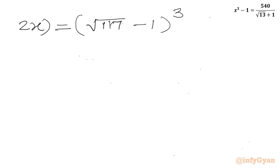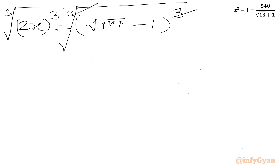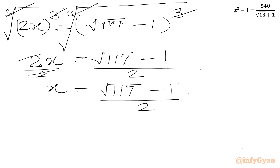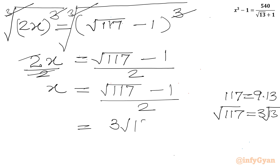Taking the cube root of both sides, for real values of x, we get 2x = √117 - 1. Dividing both sides by 2: x = (√117 - 1) / 2. Now since 117 = 9 × 13, we have √117 = 3√13. So x = (3√13 - 1) / 2.